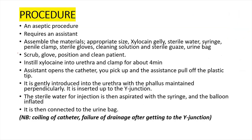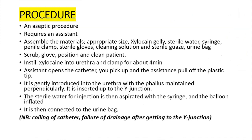Passage of urethral catheter is an aseptic procedure requiring an assistant, because doing it alone risks contaminating the procedure. You assemble the materials needed: an appropriate size catheter, xylocaine jelly, sterile water, syringe, penile clamp, sterile gloves, cleaning solution, sterile gauze, and urine bag. You must ensure you scrub and glove.